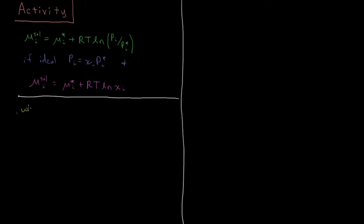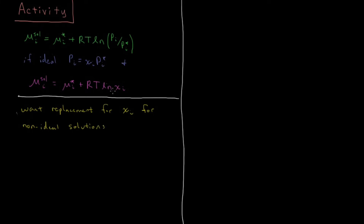What we want is a replacement for the mole fraction in the chemical potential expression for solutions which are non-ideal — solutions that do not obey Raoult's law and where we can't get this nice simple result. We want something which functions analogously to mole fraction but for non-ideal solutions.